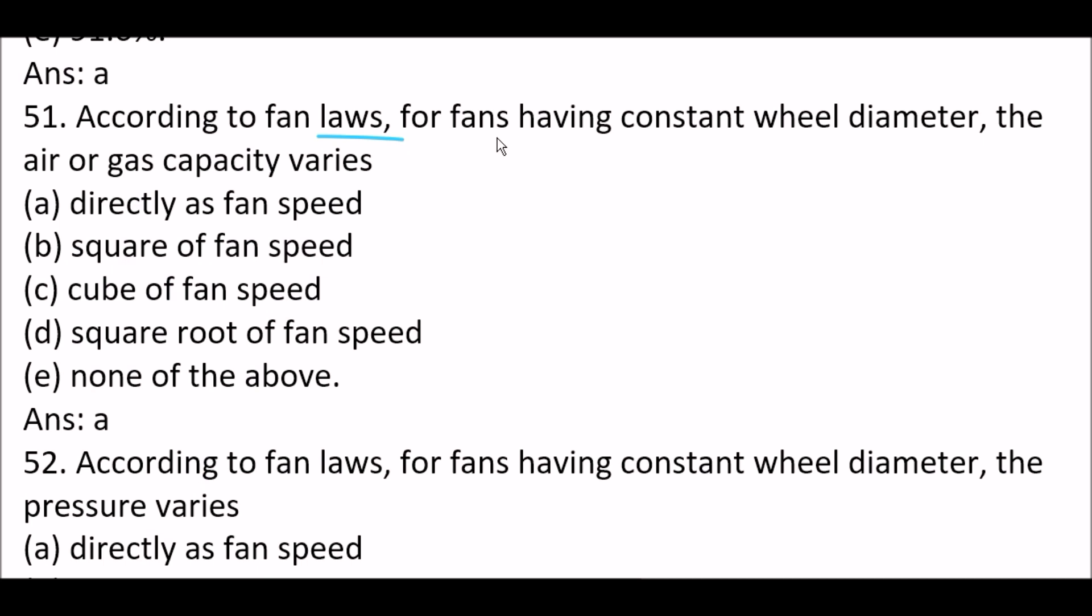Next question. Saving of work done and power by fitting an air vessel to double acting reciprocating pump is of the order of option A, 39.2%. Next question. According to fan laws, for fan having constant wheel diameter, the air or gas capacity varies option A, directly as fan speed.